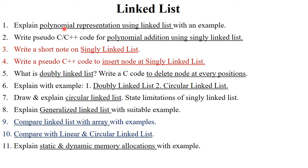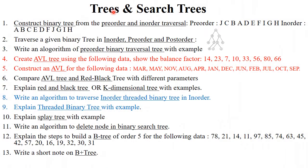The next topic is linked list. The most important topic is polynomial representation using linked list or polynomial addition using singly linked list for eight marks. Write a short note on singly linked list or insert a node in a singly linked list — prepare description, algorithm, pseudocode, and examples. Next, what is doubly linked list, explain doubly linked list, circular linked list, draw and explain circular linked list, and explain generalized linked list — generally asked for eight marks. Also compare linked list versus array, or linear versus circular linked list for four to six marks. Finally, static and dynamic memory allocation — prepare explanation and methods like malloc, calloc, free for six to eight marks.